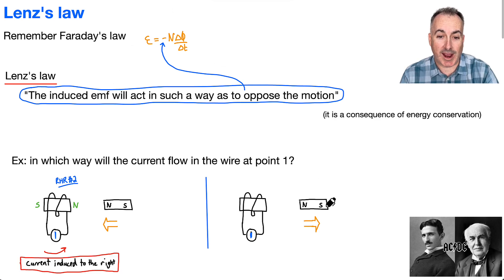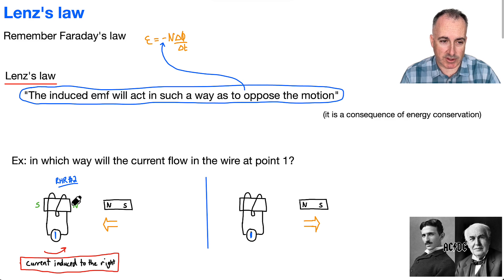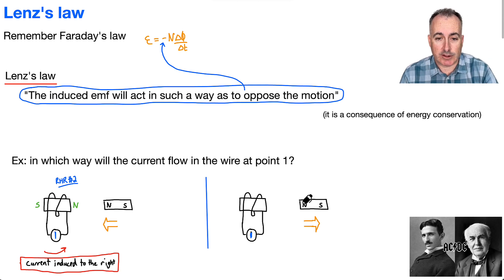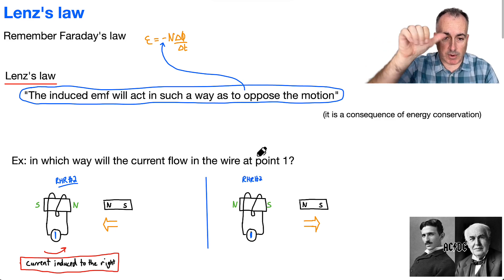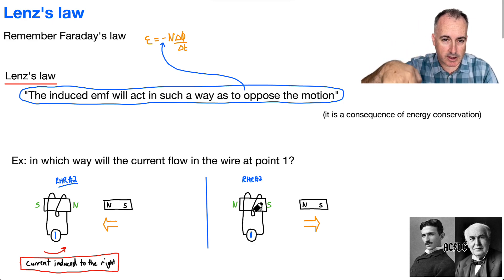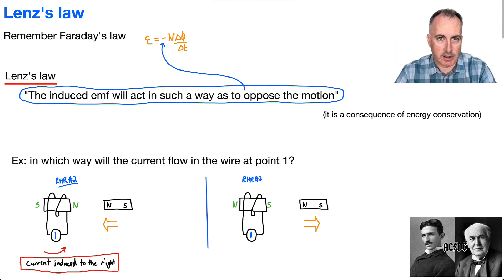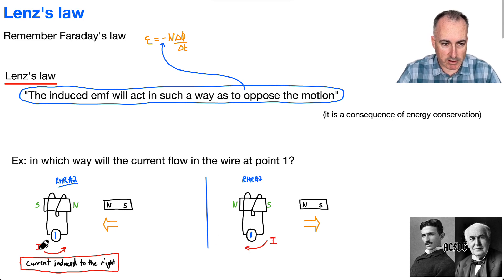Now let's look at what happens if the magnet goes away. As the north is going away, Lenz's Law says it wants to oppose that motion too — it wants to attract it back. So it'll place a south here and a north there to attract the north back. Using right-hand rule number two again, my thumb has to be to the left, meaning my fingers curl the other way, so the current is going in the opposite direction — clockwise.